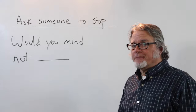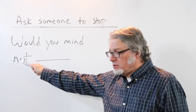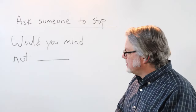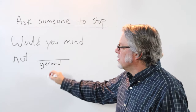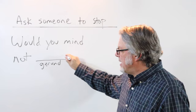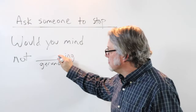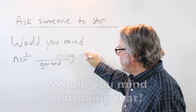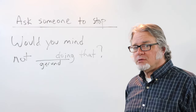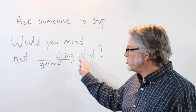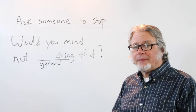To ask someone to stop doing something, start with 'would you mind,' then use 'not,' and then use a gerund in that position. For example: 'would you mind not doing that?' or 'would you mind not doing that, please?' This works for just about any kind of action that you would like someone to stop doing.